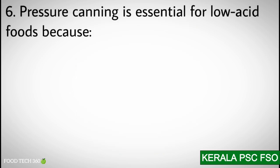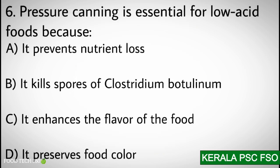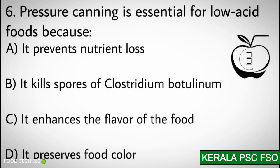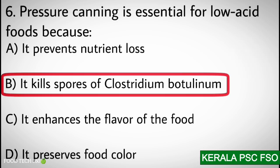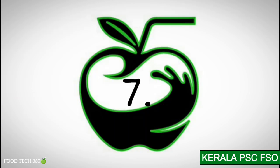Q6. Pressure canning is essential for low acid foods because: A) It prevents nutrient loss, B) It kills spores of Clostridium botulinum, C) It enhances the flavor of the food, D) It preserves food color. Correct answer: B) It kills spores of Clostridium botulinum.